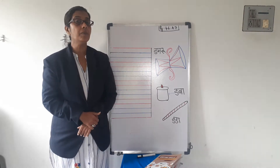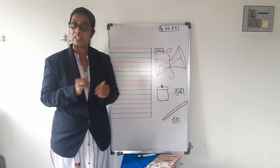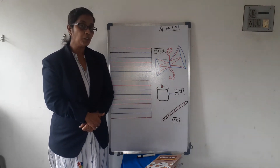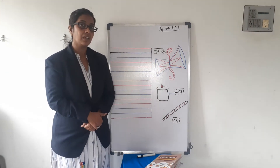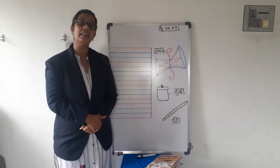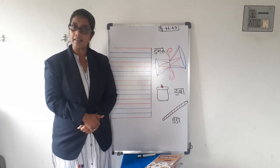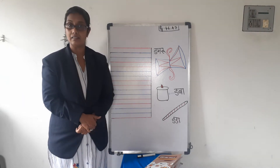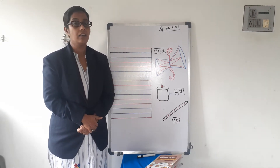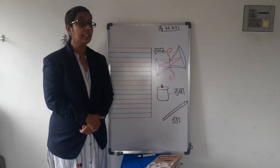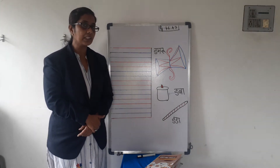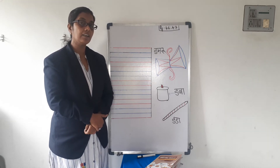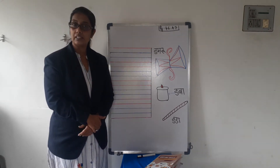Hai na? Jis se hum ek dusre se communicate kar sakte hai, baat chit kar sakte hai. Aap mobile me YouTube dekhte na sab — woha kis se chalata hai? Internet se. Aur kya means of communication? Mobile. TV. TV pe aap cartoons dekhte ho na sab. Shin Chan, Doremon. Hai na? That is TV.